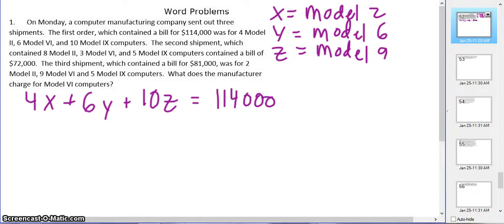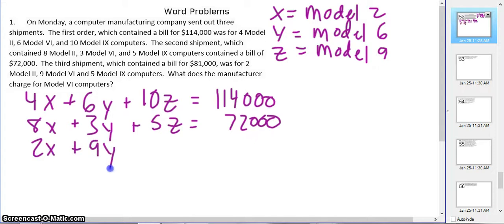Then we have 8X + 3Y + 5Z, and that was $72,000. And our last one, we have 2X + 9Y + 5Z, and that was $81,000. That's our first step, so we get points for doing that.